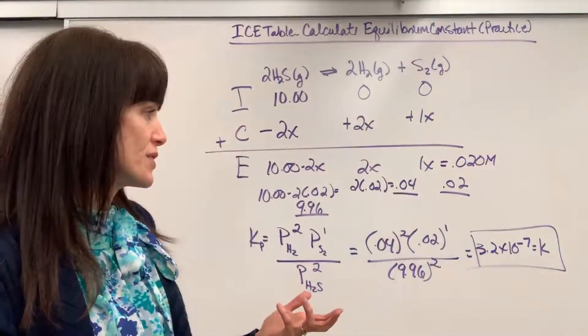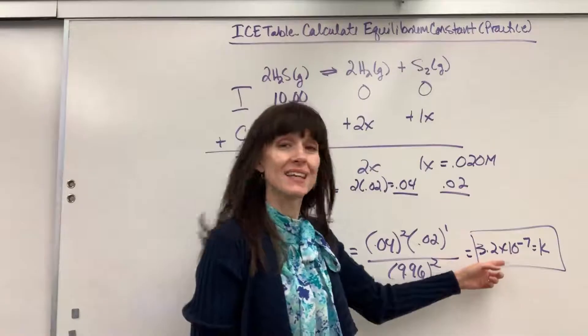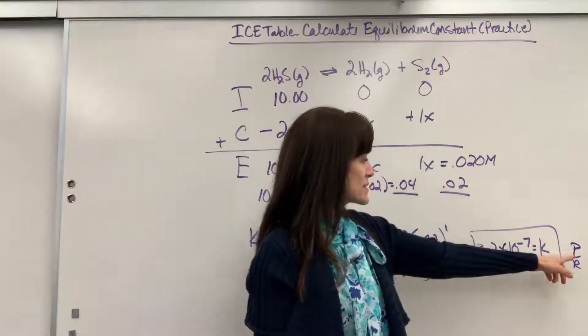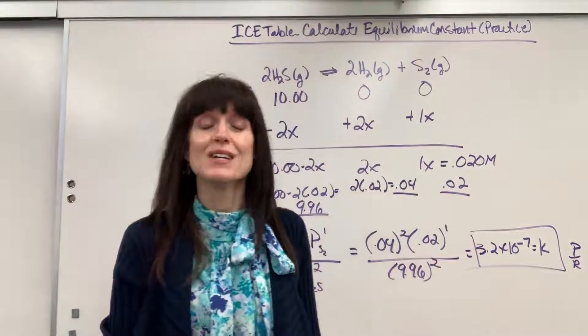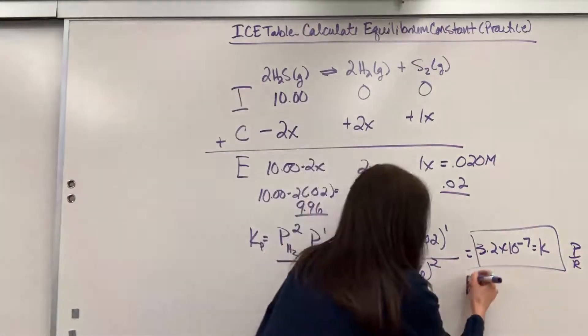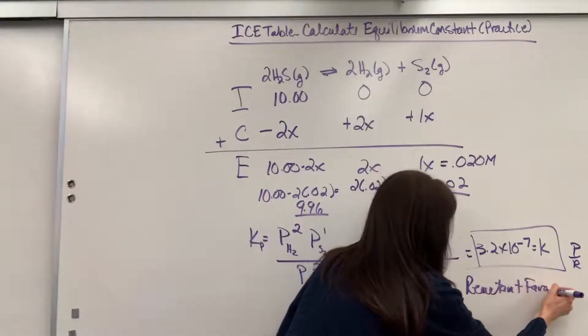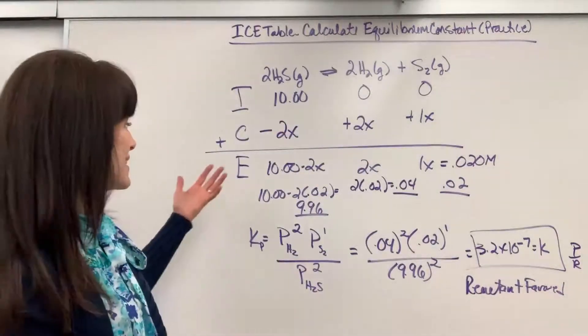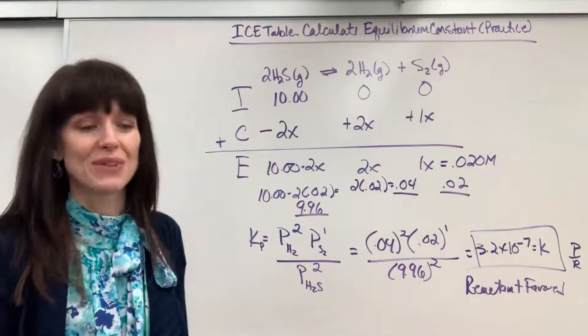So the follow-up question is, is that reactant or product favored? Well, if K is less than 1, remember products over reactants, if it's less than 1, it means we have a lot more reactants than we do products. So this is going to be reactant favored. Not a lot of those reactants are going to change to the products. And you can see that we start at 10 and we end at 9.96. Definitely reactant favored.